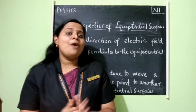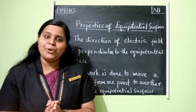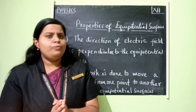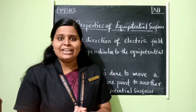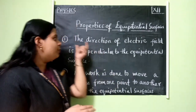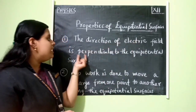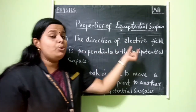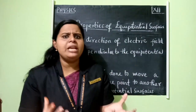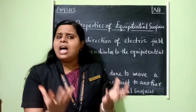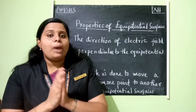So, equipotential surfaces provide us an alternate visual representation of the electric field for different charge configurations. Now you will have an idea about equipotential surfaces. Which are the two important properties of equipotential surfaces? The first one is that the direction of electric field is perpendicular to the equipotential surface.